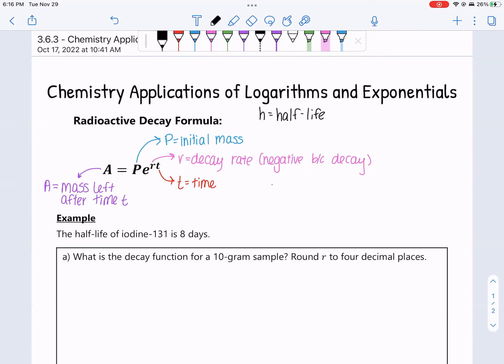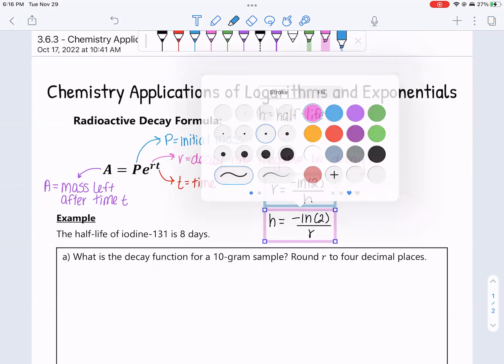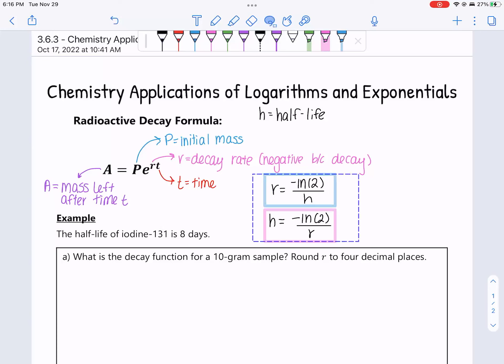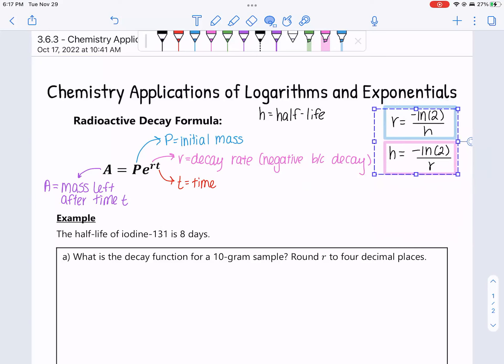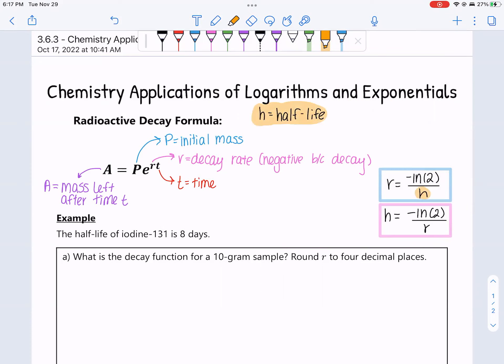There are also two other formulas that are important here. And that is relating half-life, which is the time it takes for half of an isotope to decay. So it relates half-life to the decay rate. So first of all, H is equal to half-life. Here are two formulas. R is equal to negative ln(2) over H. The decay rate is equal to negative ln(2) over H. And if you rearrange that, half-life H is equal to negative ln(2) over R.